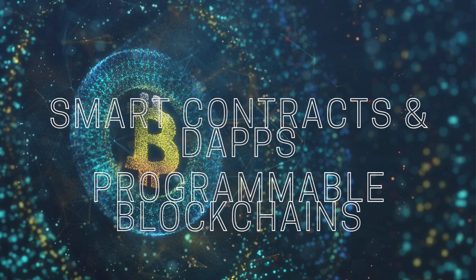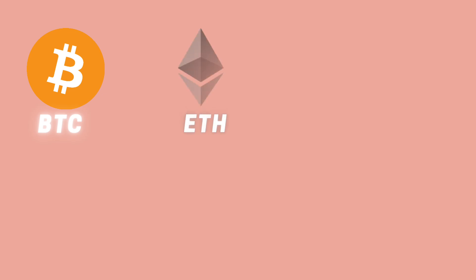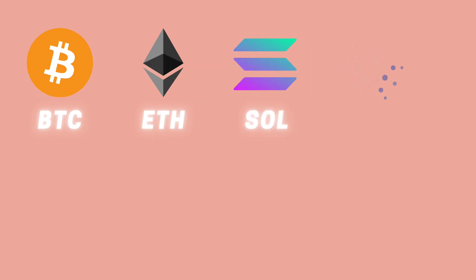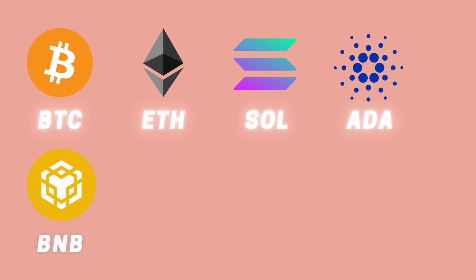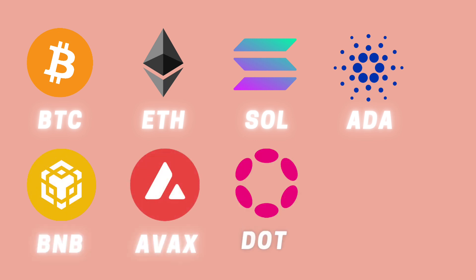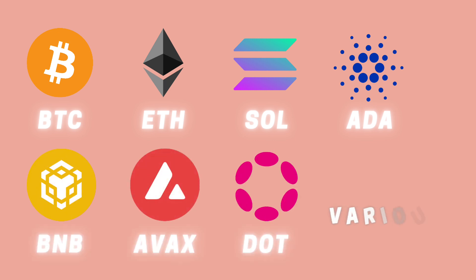Examples of Layer 1 blockchains: Bitcoin (BTC) for simple transactions and strong security; Ethereum (ETH) for smart contracts, DeFi, and NFTs; Solana (SOL) for high-speed transactions and low fees; Cardano (ADA); BNB Chain; Avalanche (AVAX); and Polkadot (DOT), each supporting various use cases.